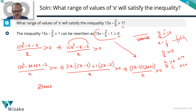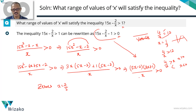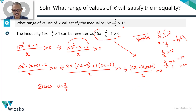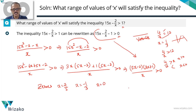The zeros are: when 5x minus 2 equals 0, x equals 2 by 5. When 3x plus 1 equals 0, x equals minus 1 by 3. And the denominator becomes 0 when x equals 0 — we are never going to substitute x as 0; we're just identifying it as a zero point. So the zeros of this polynomial are three numbers: 2 by 5, minus 1 by 3, and 0.